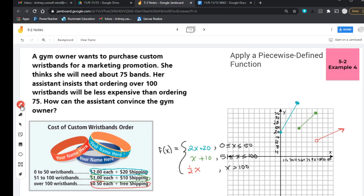So here you can see your three rates. And so by purchasing over 100, you can see that the rate is lower or that the slope is lower here. And so that's what I'm going to type here. By purchasing over 100 wristbands, the rate slope is lower. Therefore, the cost per item is cheaper.